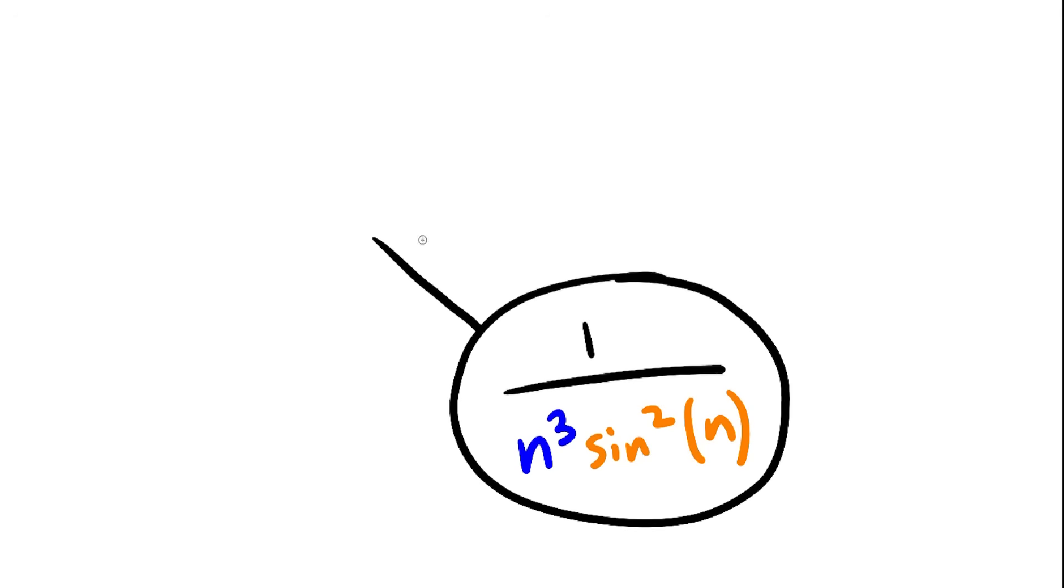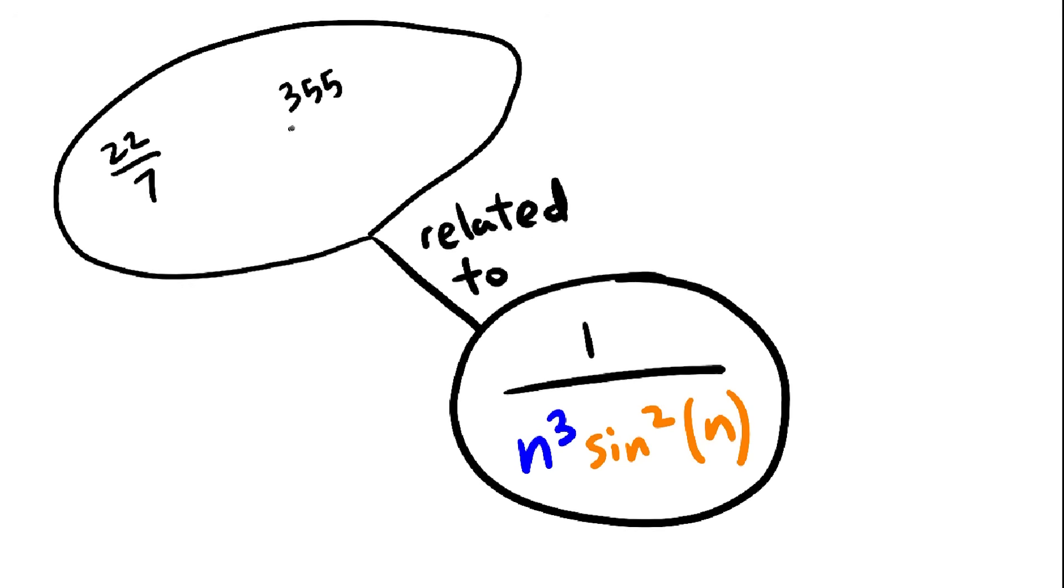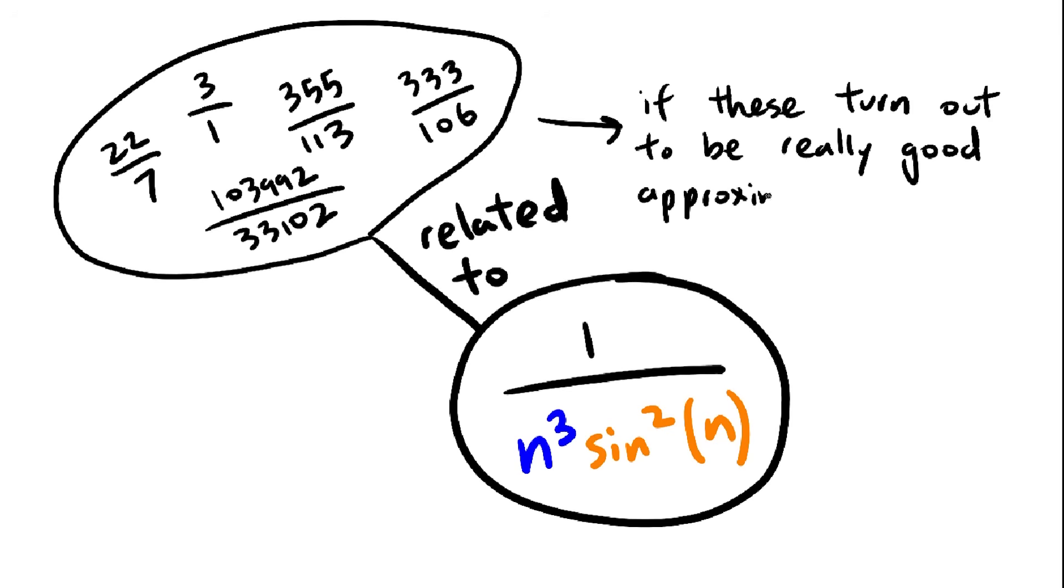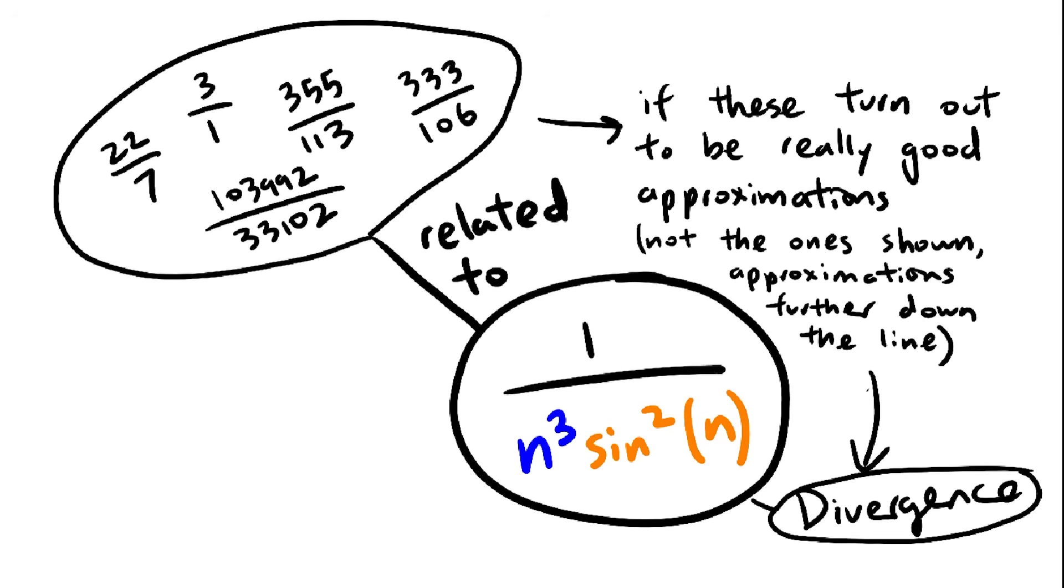The point of all this is, the behavior of the Flint Hills series is closely related to all these fractional approximations. The better these approximations are, the more likely the Flint Hills series is to diverge.